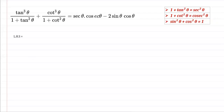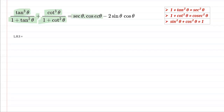This is one question taken from Class 10 trigonometric identities. The LHS of this question is tan³θ over (1 + tan²θ) plus cot³θ over (1 + cot²θ), and we have to prove it is equal to secθ·cosecθ minus 2sinθ·cosθ.